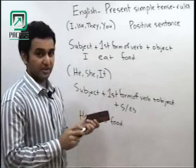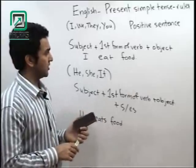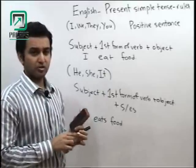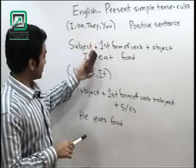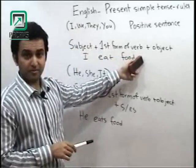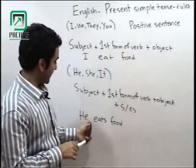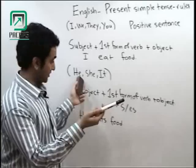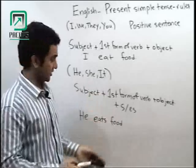This free book is available on this website and in near future my spoken English book is also coming. You see, I, we, they, you use first form of verb, but he, she, it: he eats food, she eats, it eats.